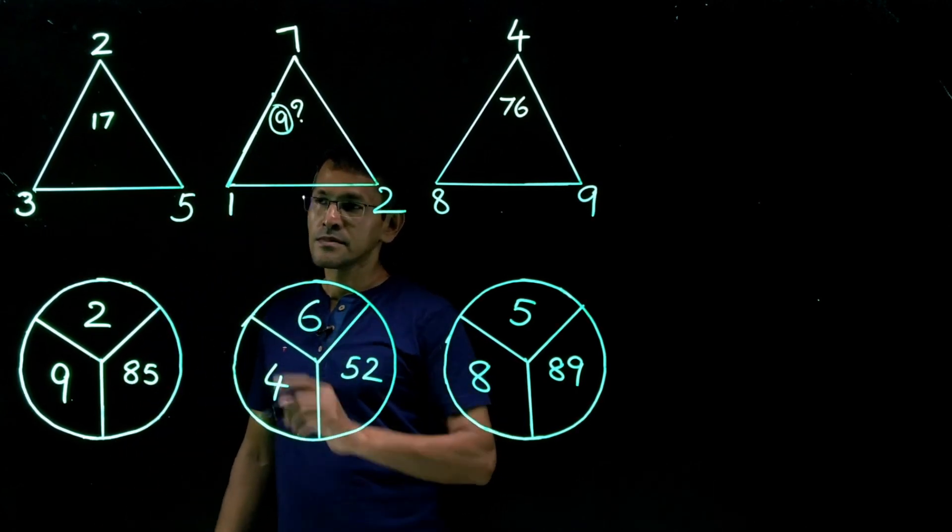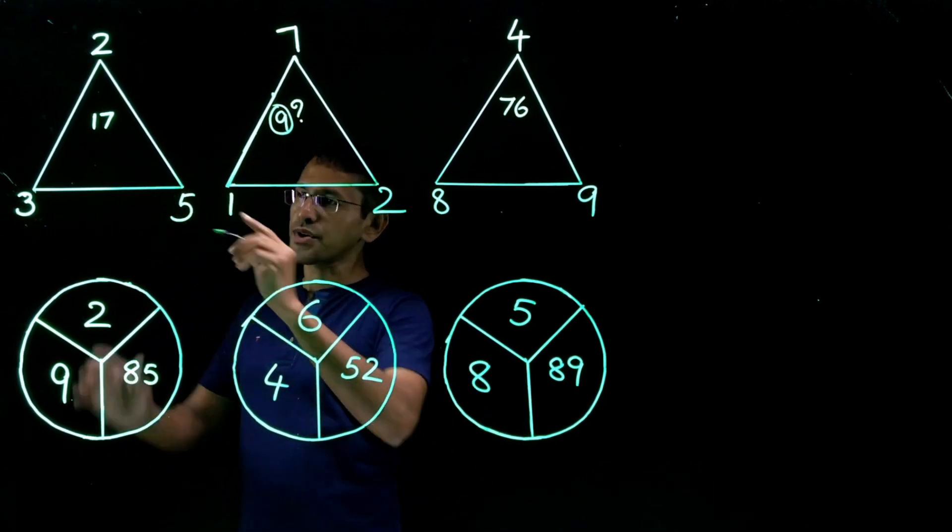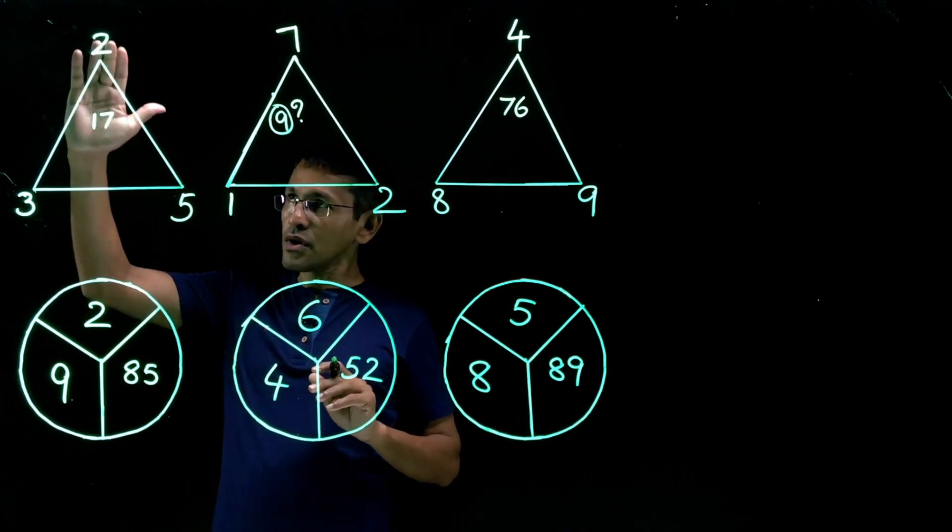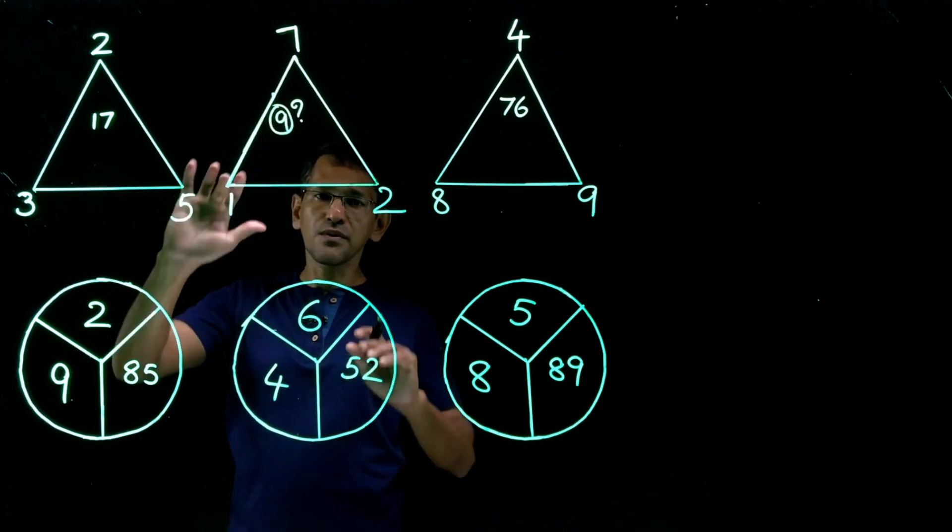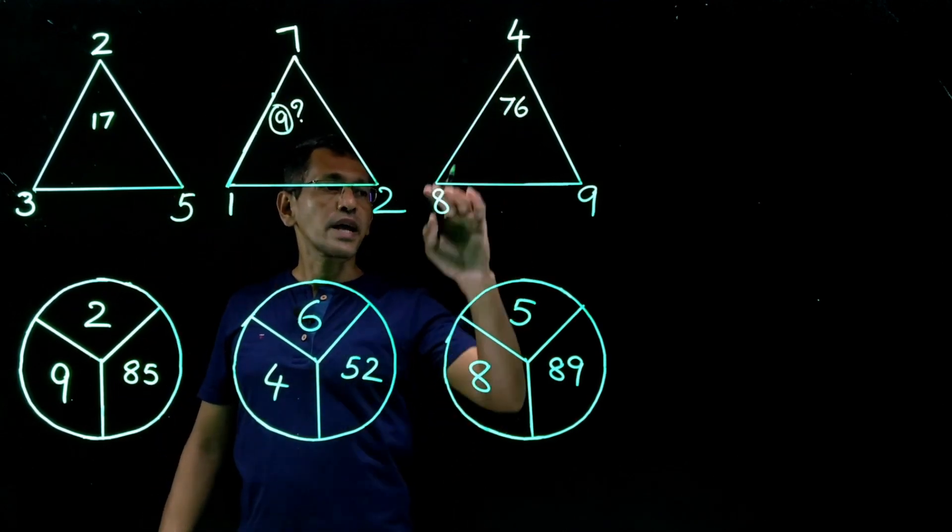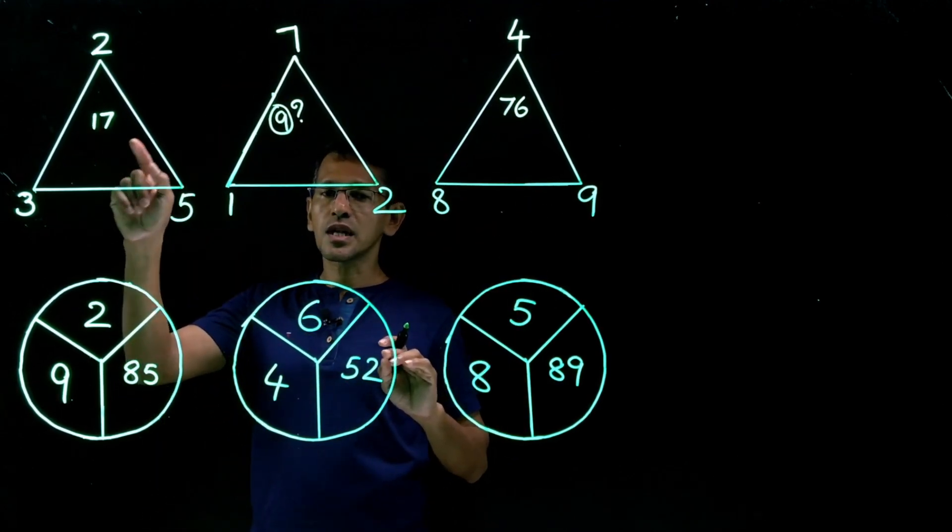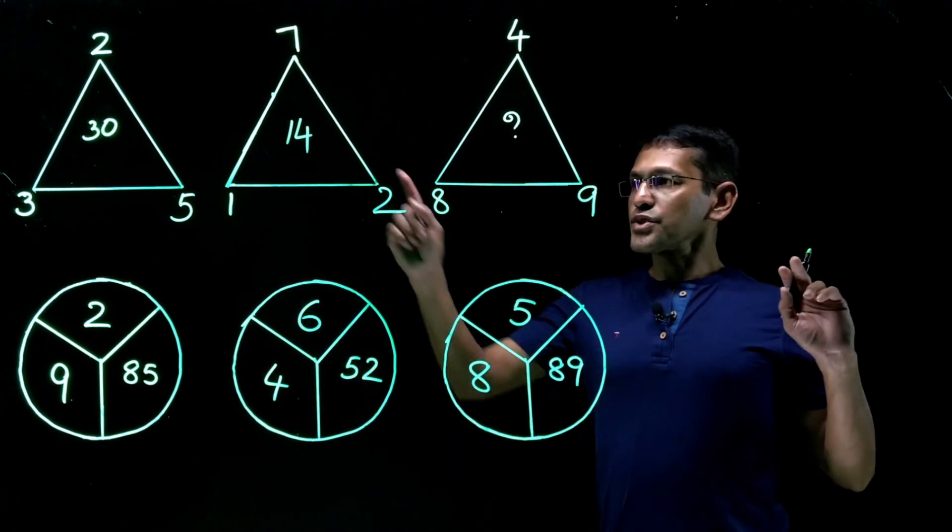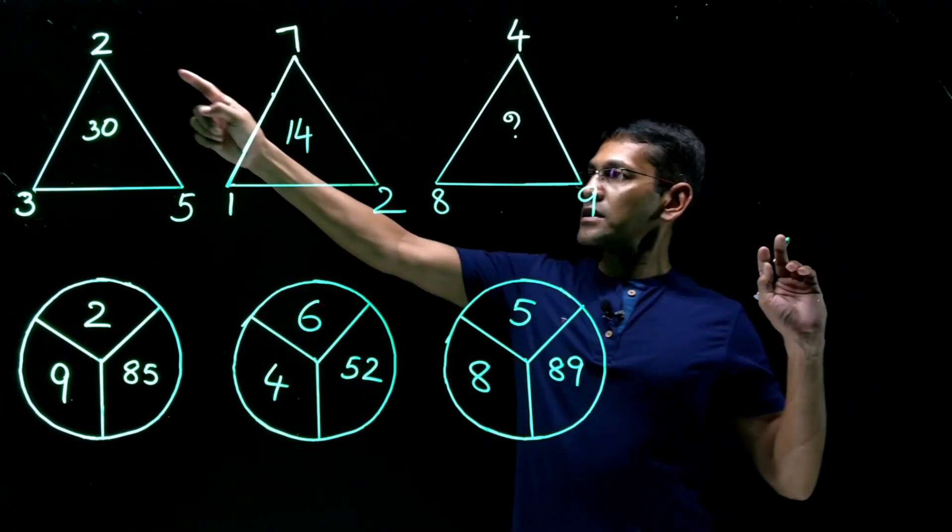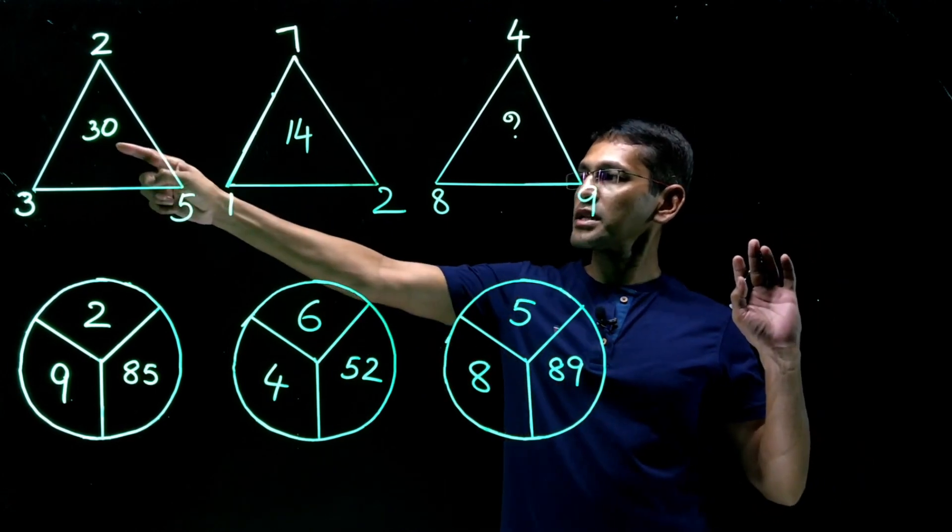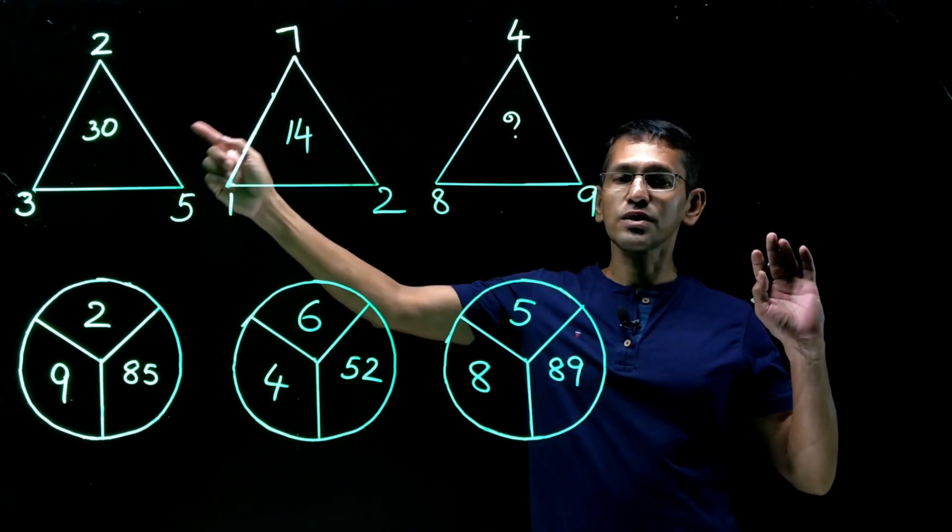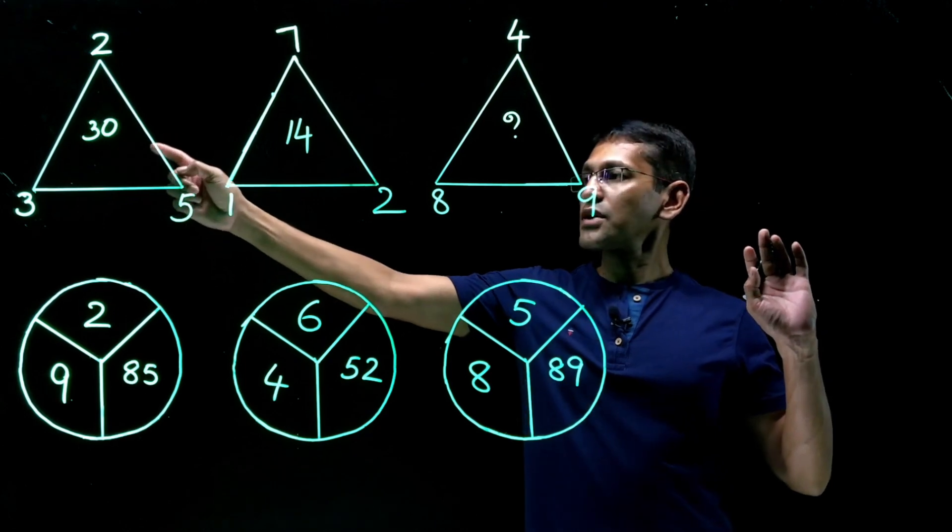Well, in this similar question, I'll show you what I'm going to do right now. I will change this 2, 3, 5, 7, 1, 2, 4, 8 and 9. But I'll change the number in the middle. So this is what I have mentioned. These numbers 2, 3 and 5, I haven't changed those numbers, but the number in the middle has changed. It was 17 earlier, now it is 30.